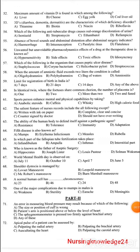Diarrhea, dementia, and dermatitis are characteristic features of which disorder? Options: thiamine, biotin, niacin, or riboflavin. The answer is niacin deficiency (pellagra).